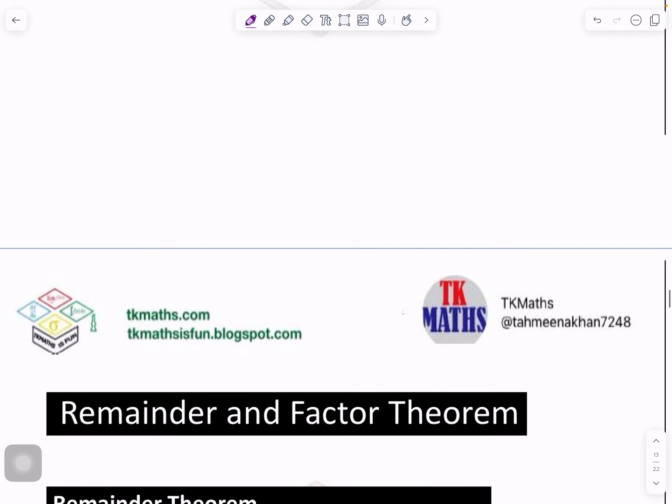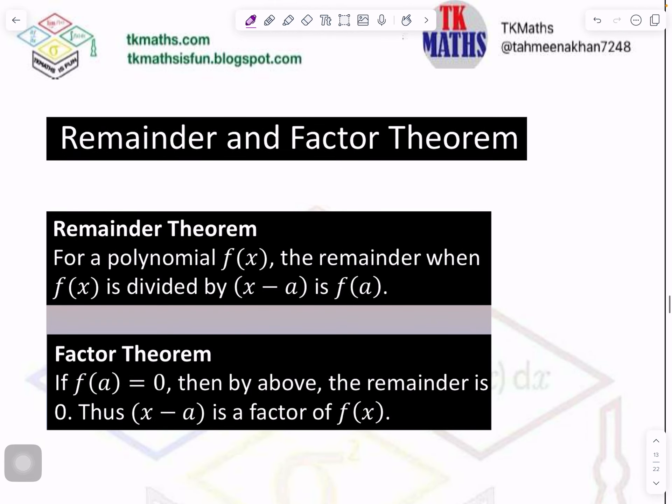Now in general form, we write the remainder and factor into this form which is very important to understand. Here you can see this was my polynomial and x minus a is my divisor. Here it means f(a) will give me remainder. Similarly, exactly the same thing in factor theorem but then in that case, f(a) will be equals to 0 because the remainder gives you 0 in factor theorem.